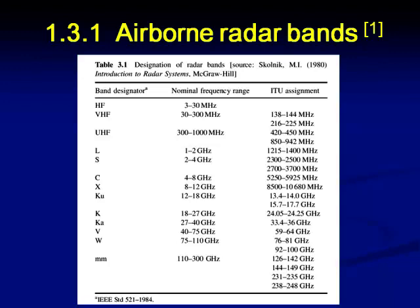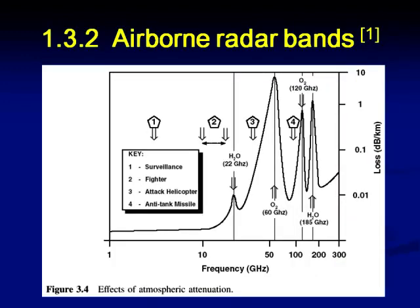These frequencies are identified taking the atmospheric attenuation of the electromagnetic waves. As you can see from the graph, the atmospheric attenuation is low only at certain frequencies. At these frequencies, we use radars for surveillance, for attack helicopters, anti-attack missiles, and also for fighters, as indicated. So the frequencies are mainly decided based on the attenuation of these waves when they travel through the atmosphere.